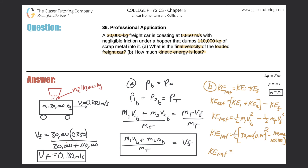Calculating: 30,000 times 0.85 squared minus 140,000 times 0.182 squared gives about 17,000, then multiplied by 0.5. The kinetic energy lost works out to approximately 8.52 × 10³ joules. In inelastic collisions there is a loss in kinetic energy, whereas in elastic collisions there is conservation of energy.